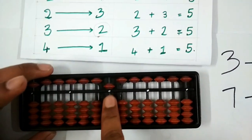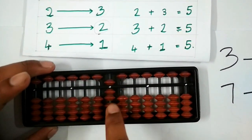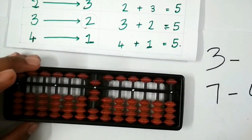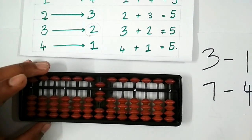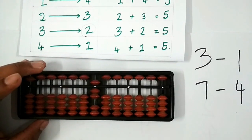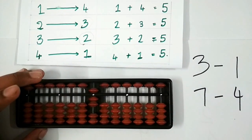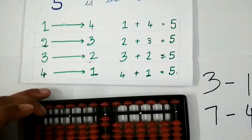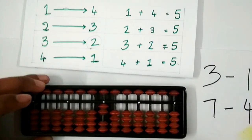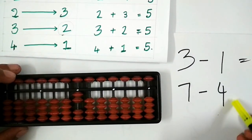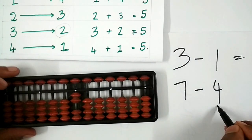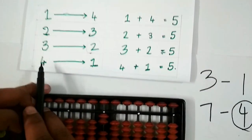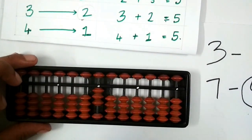We see that we have only 2 beads at the lower end, so we need to use the friends concept. To use the small friends concept in subtraction, the primary step is to remove the 5. We have removed the 5 and now we have to add the friend of 4. The friend of 4 is 1, so we add 1.